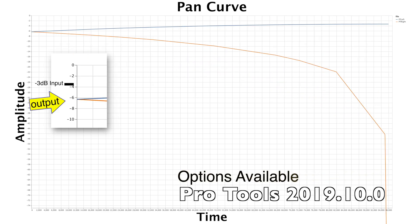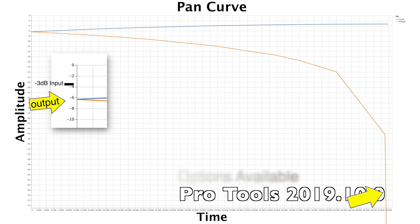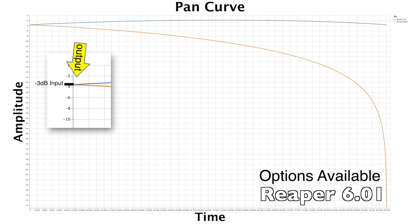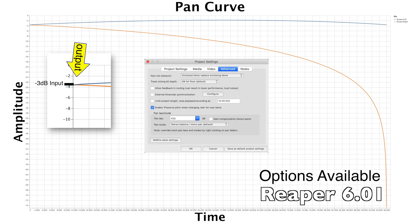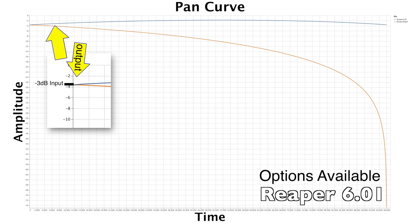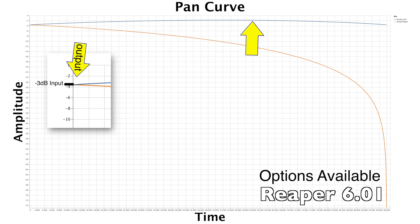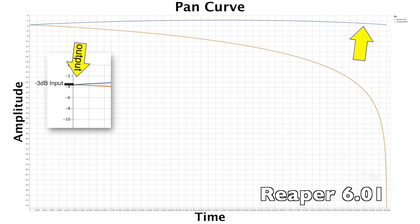Pro Tools defaults to negative 3 decibels in the center and compensates 3 decibels on the side. That automation behavior I think is due to the automation scaling in the lane that you draw in. Reaper defaults to 0 decibels in the center with a huge number of options, but the side boost is rather interesting — it's about 2 decibels up 50% through the pan curve, and at the end there's nothing at all.